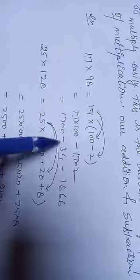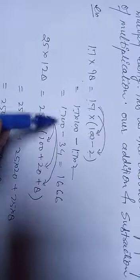17 into 100, 1700, minus 17 into 2 is 34. Now 1700 minus 34, you will get 1666.